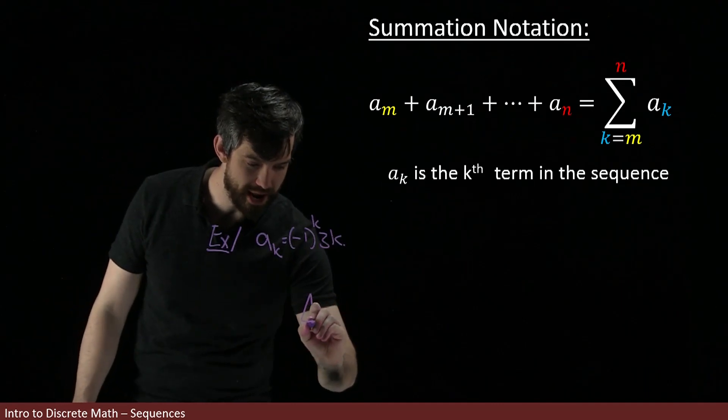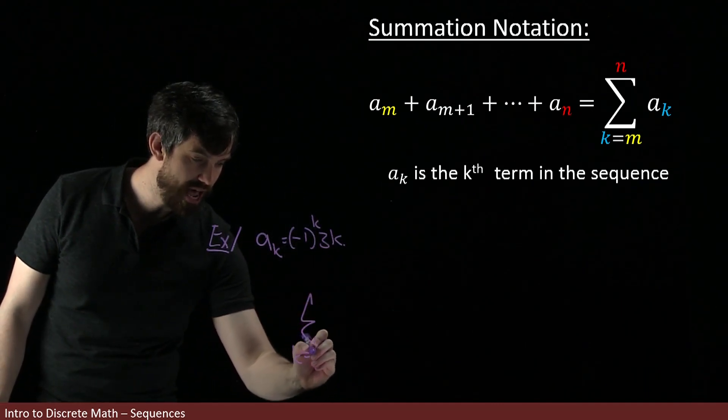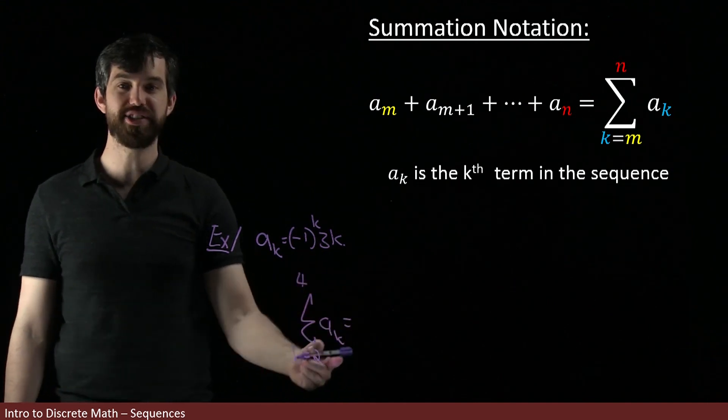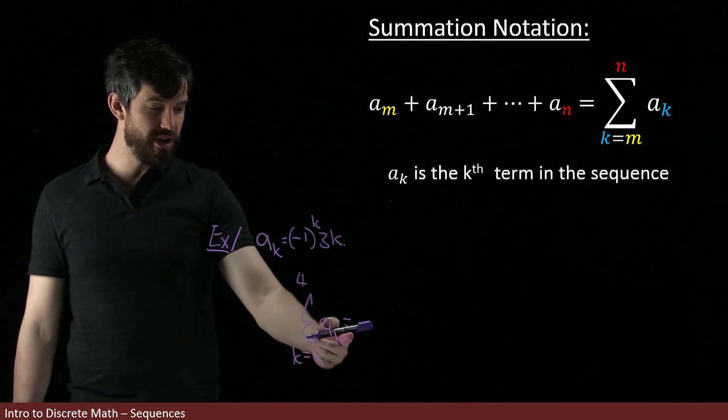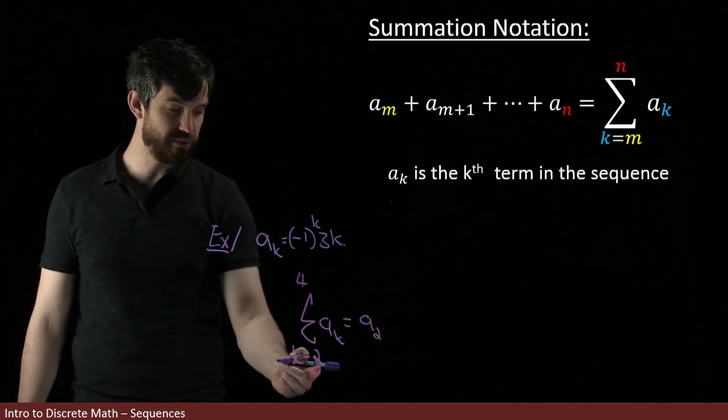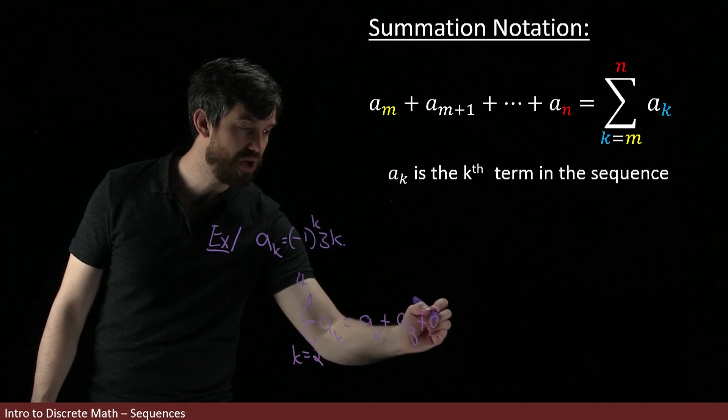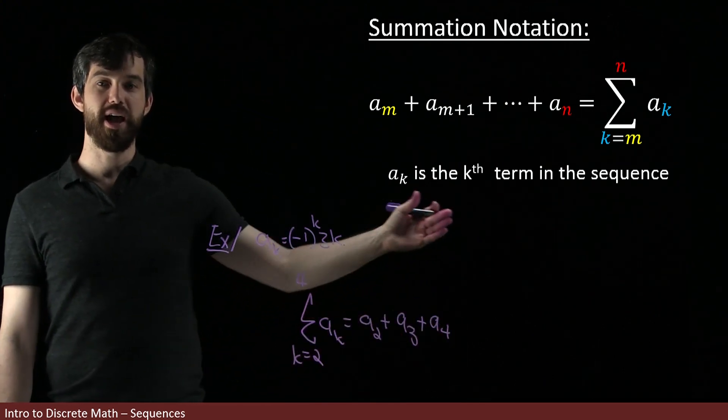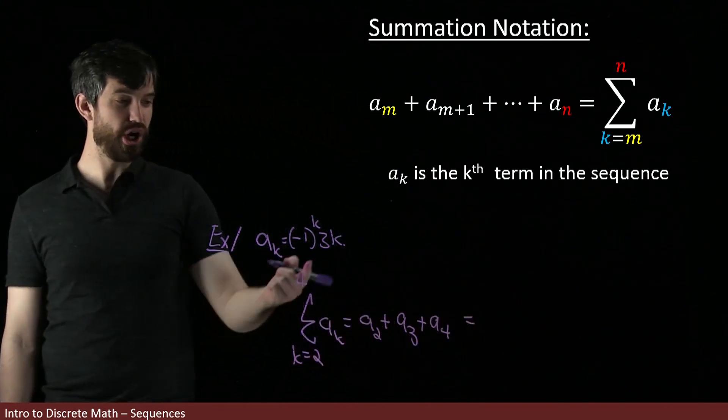And then, what I'm going to do is I want to try to compute this thing. I'm just making one up at random. I'm going to take the sum, and I'm going to do k equal to 2 up to 4 of the ak. Okay, and I want to try to sum this thing up. Well, what we can do here is, let's do the a2. That's my first term starting at 2. Then, I add the a3, and finally, I'm going to go up to the a4. So, those are my terms: a2, a3, and a4.